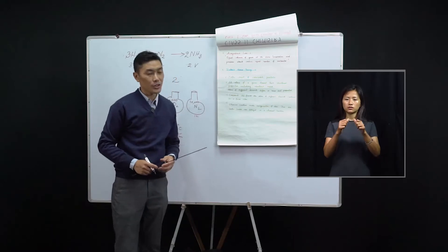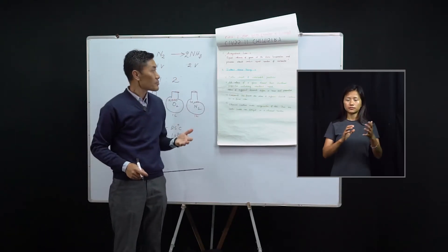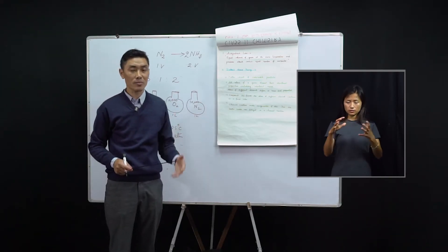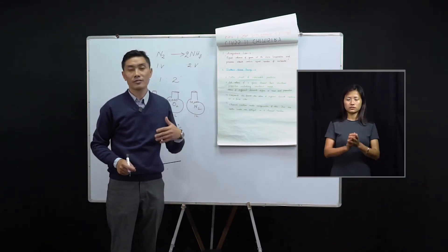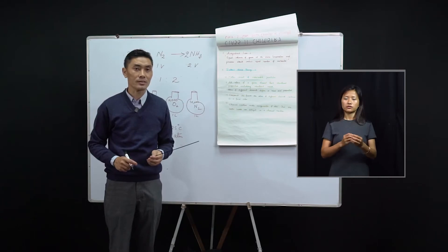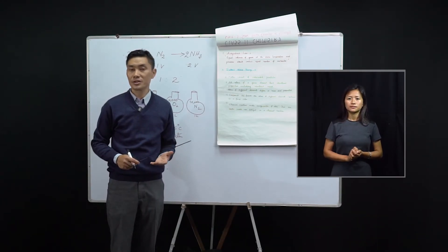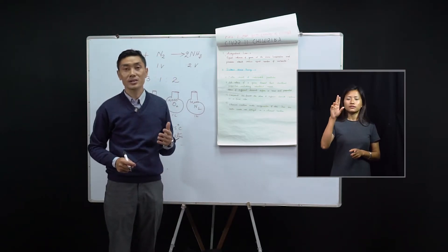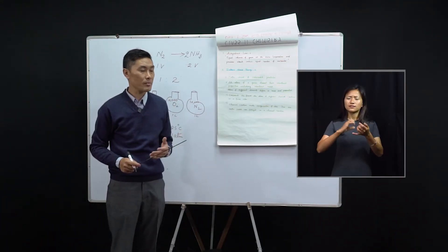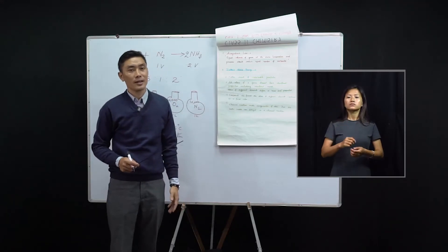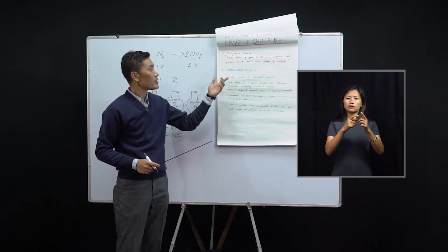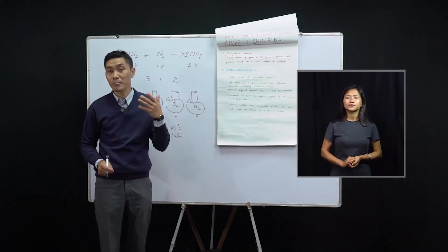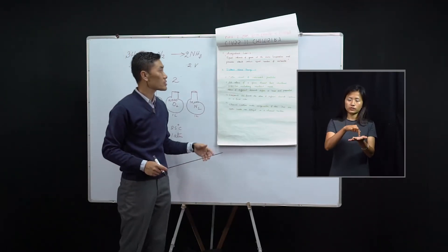Next, we go to Dalton's Atomic Theory. The concept that all matter is made up of numerous tiny particles called atoms was first put forward by Greek philosophers, but it did not have any scientific proof. It was only in 1805 that John Dalton, an English scientist, could give a strong scientific basis to this theory, known as Dalton's Atomic Theory. Let us see some main postulates from this theory.